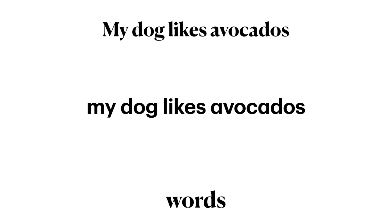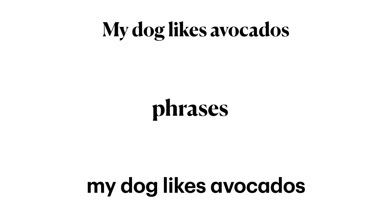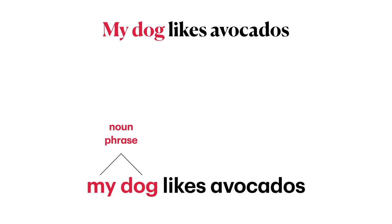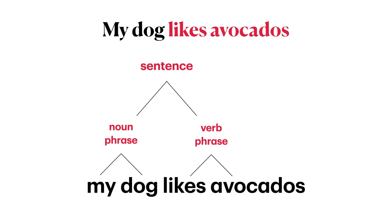Next, we have the words themselves: 'my,' 'dog,' 'likes,' 'avocados' — this sentence has four words. Then we can look at the phrases. Phrases are combinations of words that comprise a syntactic constituent. In this sentence, we have a noun phrase 'my dog' — some analyses would call this a determiner phrase, but in either case it's a syntactic constituent. The second phrase is a verb phrase: 'likes avocados.' Finally, the noun phrase and the verb phrase combine together to form a sentence: 'My dog likes avocados.'